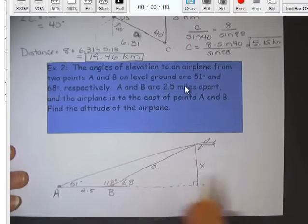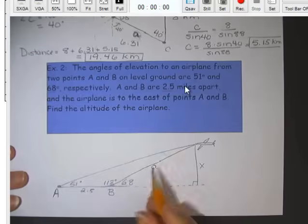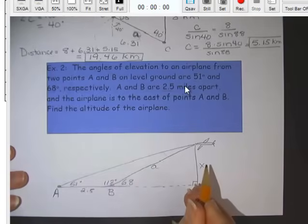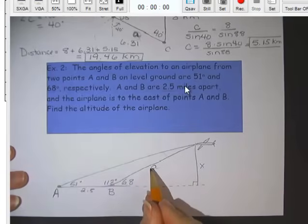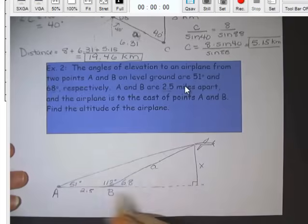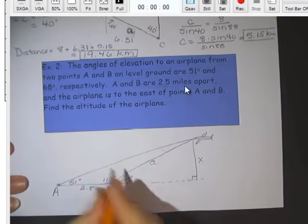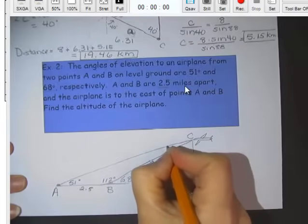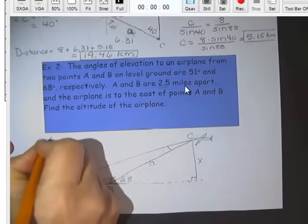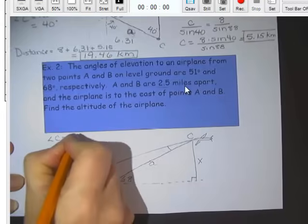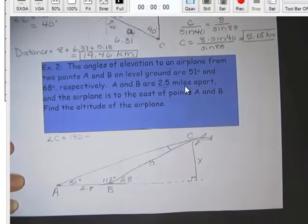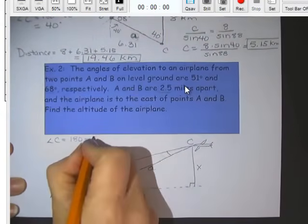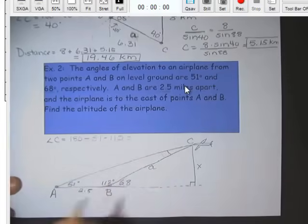And since 68 gives X's opposite over hypotenuse, it looks like we'll use sine. So let's start off with law of sines. If I try to find up here angle C, meaning this angle, angle C would be 180 minus 51 and 112. So angle C comes out to be 17 degrees. So there's 17.